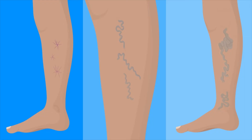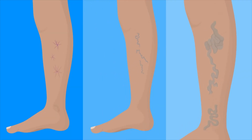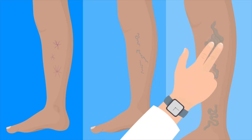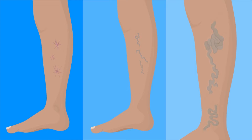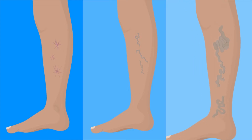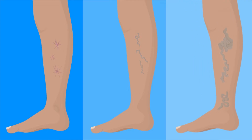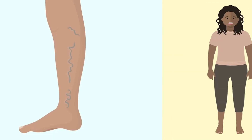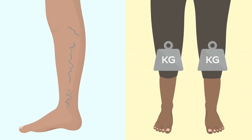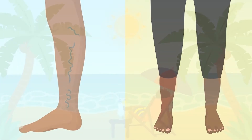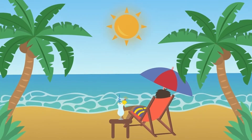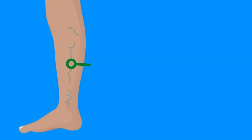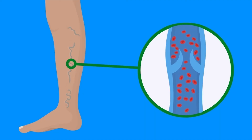Reticular varices are thicker than spider veins and more bluish in colouring. Stem varices are the most advanced stage of varicose veins. As you can see, they are large, tortuous and palpable. These varices are most significant from a medical aspect. Besides visible varices, other signs and symptoms of varicose veins include the feeling of heaviness, tension and tiredness in the legs, which is particularly pronounced in summer and in the evenings.